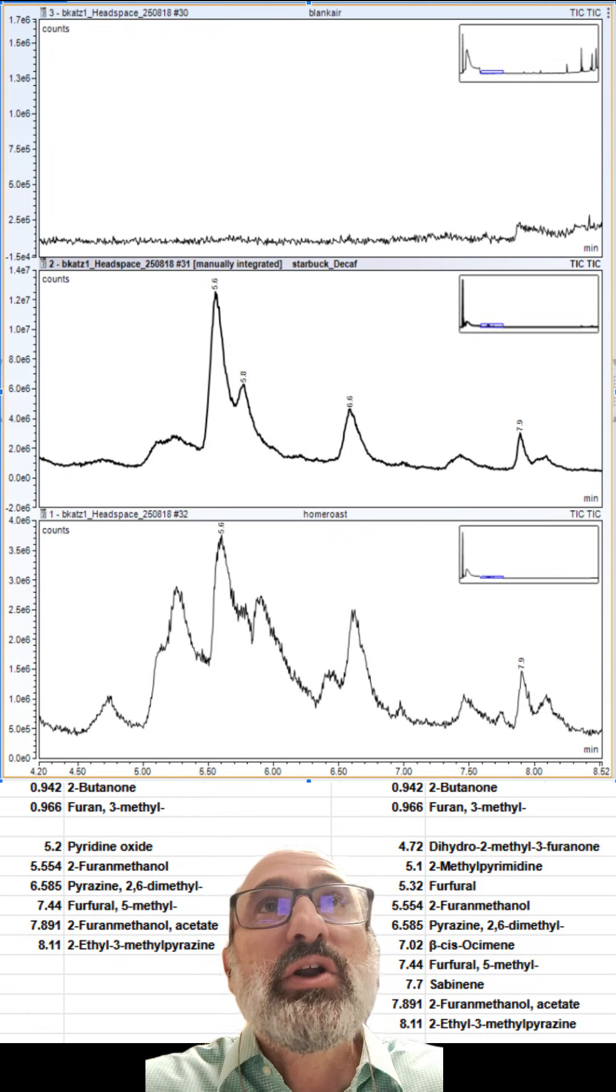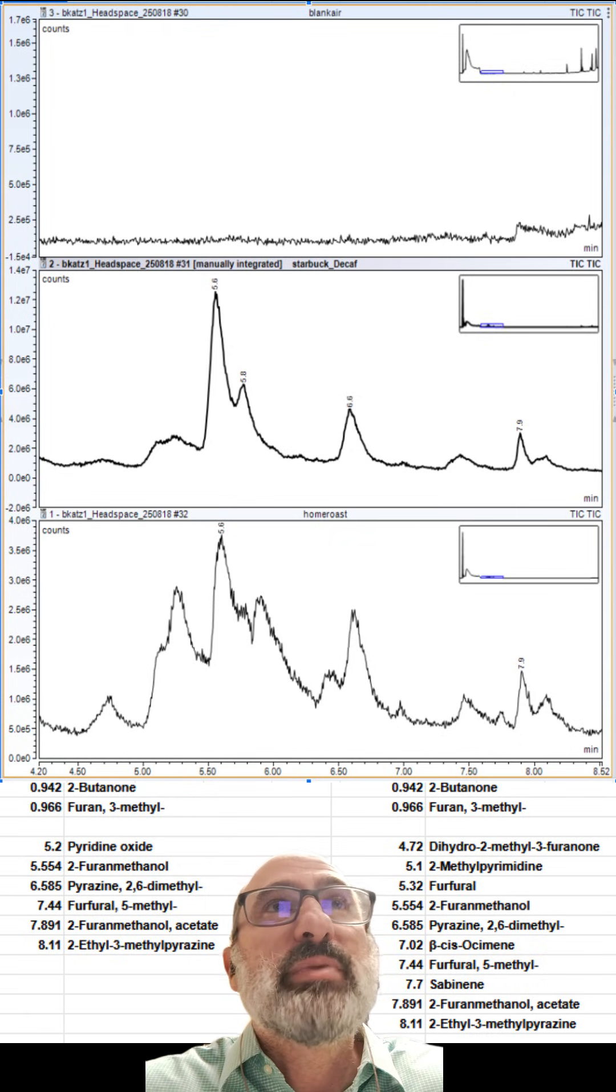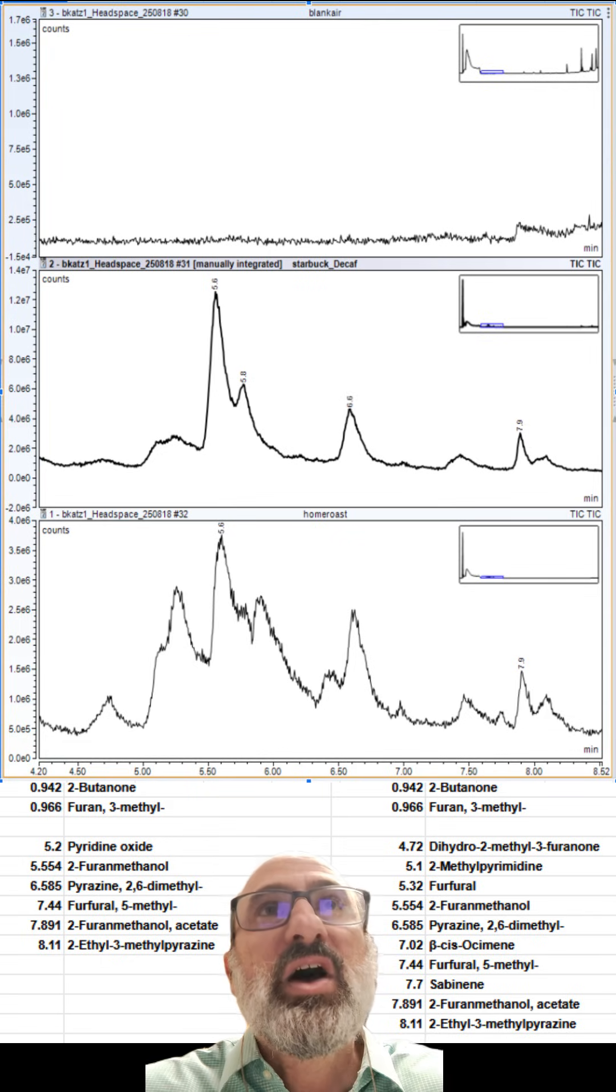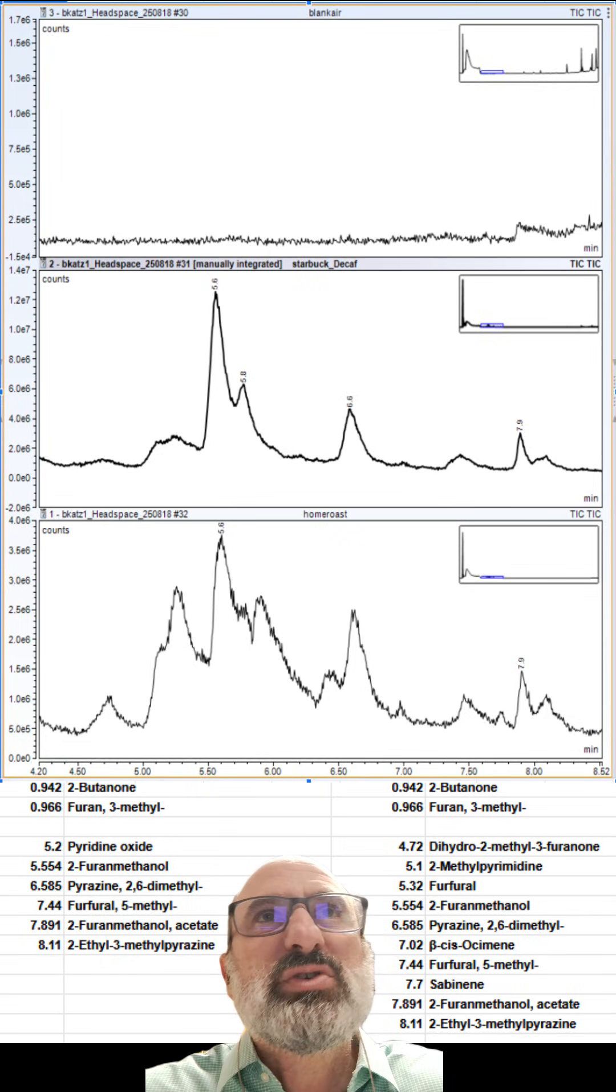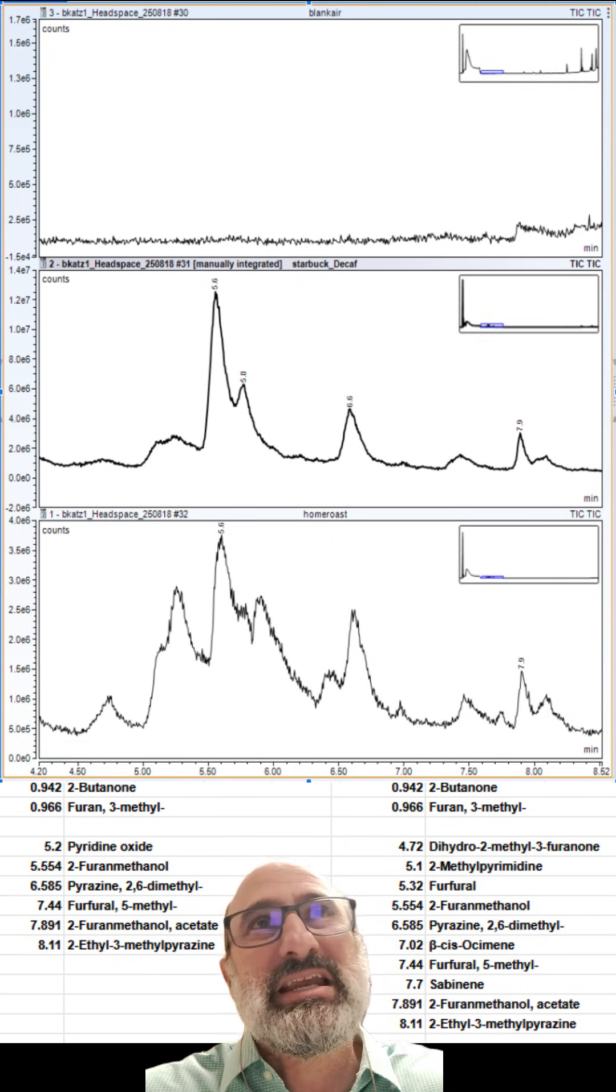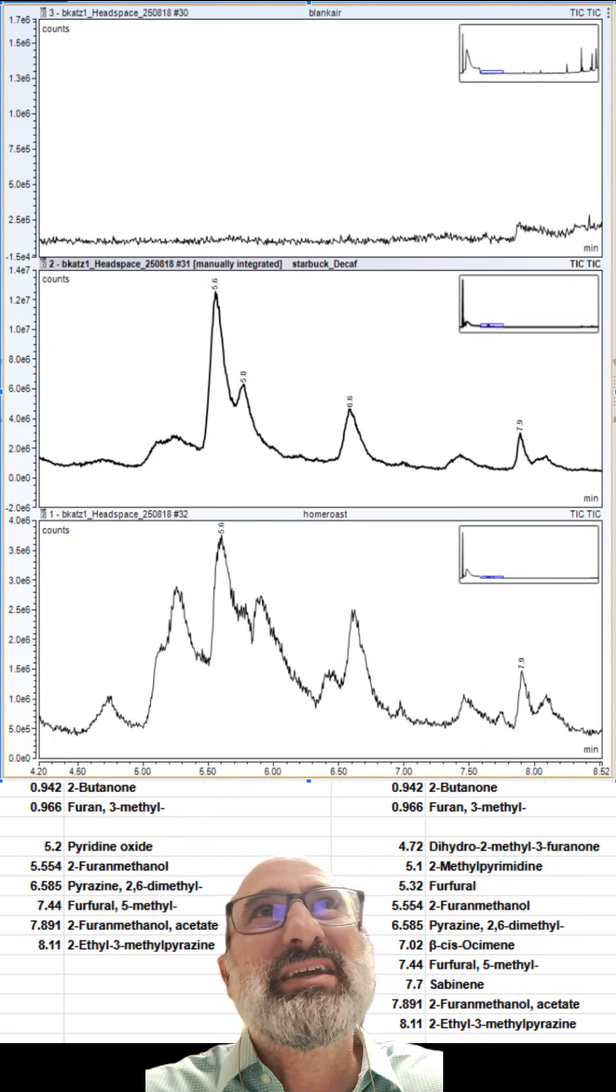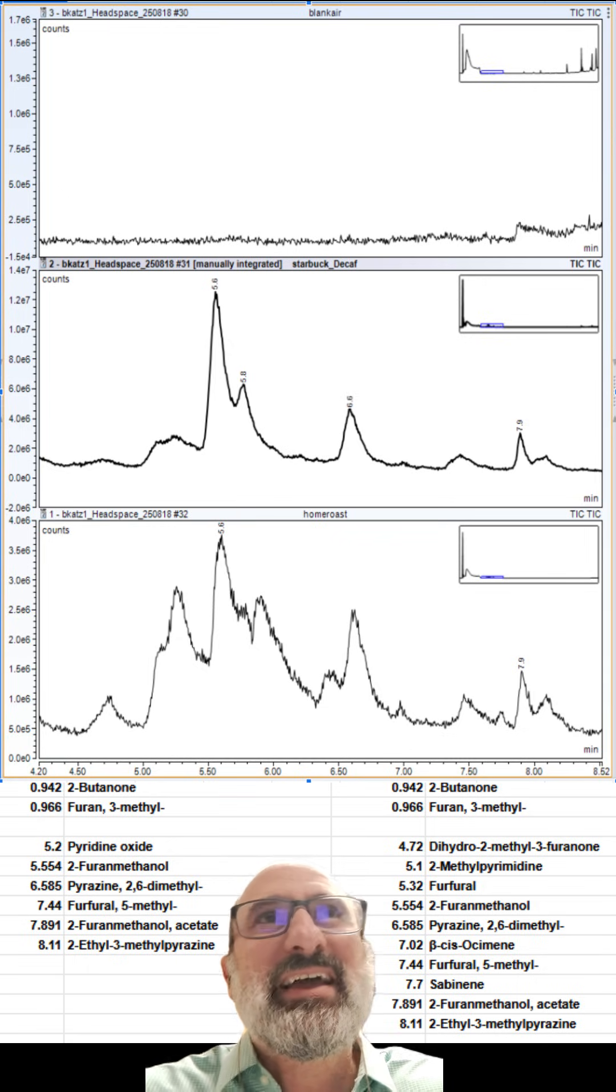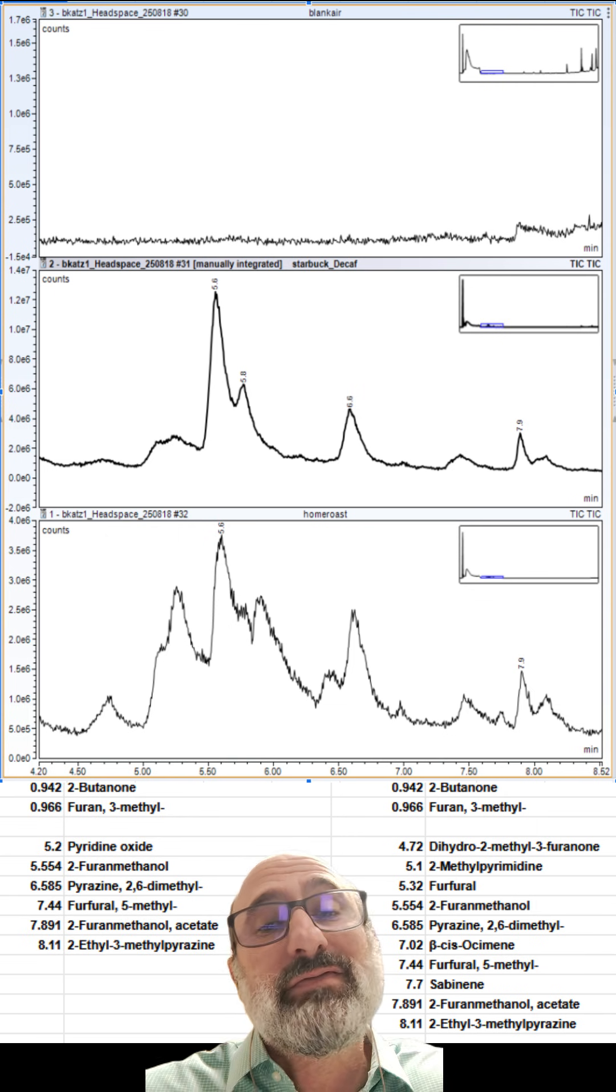So the differences though are these furanones. We got a little bit more, these are all pyrolysis products, but really cool. We've got ocimene and sabinene, which are terpenes in my home roast. So let's go ahead and see what those taste like. Maybe we can figure out why my home roast is so much more delicious than the Starbucks coffee.